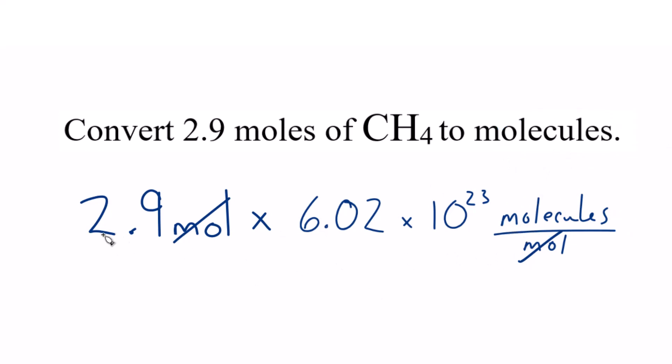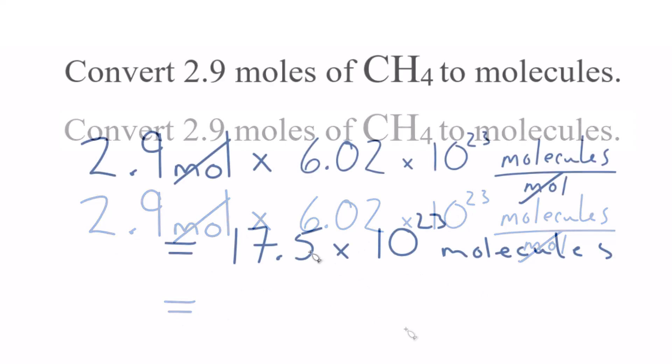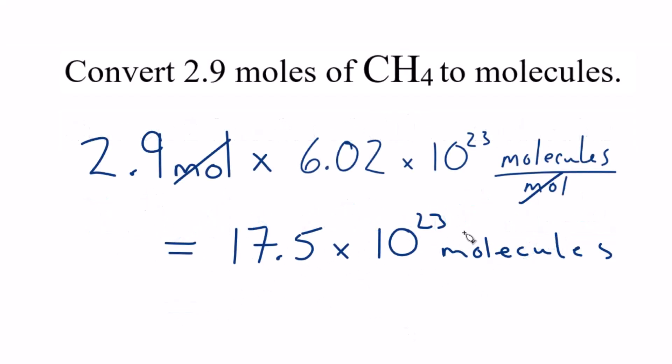When we multiply 2.9 times 6.02 times 10 to the 23rd, we end up with 17.5 times 10 to the 23rd molecules, or 1.75 times 10 to the 24th molecules. These are the same numbers. That's it.